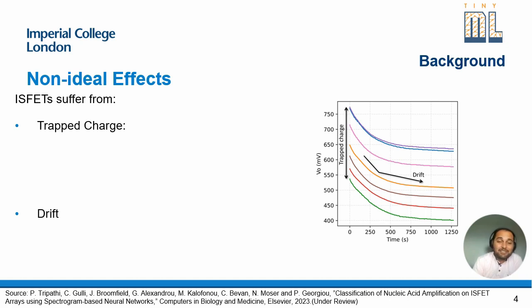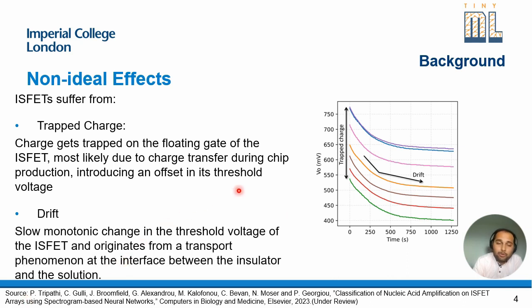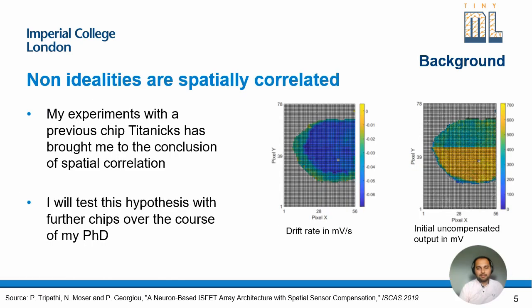Like all other devices, ISFETs also suffer from non-ideal effects. Multiple ISFET sensors on the same chip, for the same pH value, start at different values — they have an offset in their initial values — and they drift over a period of time. This offset is known as trapped charge, basically the charge trapped on the floating gate, most likely due to charge transfer during chip production, introducing an offset in threshold voltage. Drift is a slow monotonic change in threshold voltage originating from a transport phenomenon at the insulator-solution interface. In 2019 we published in SCAS that non-idealities are spatially correlated, demonstrated on a chip called TITANIX on AMS 0.35 micrometer, and we will test this hypothesis further over this research.